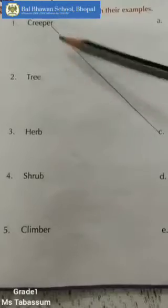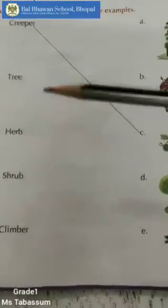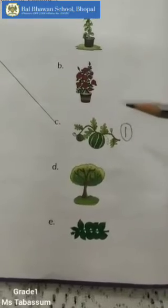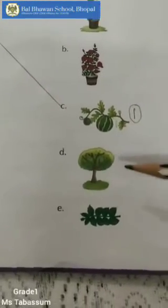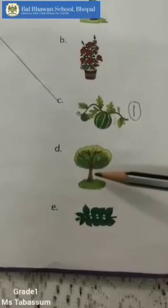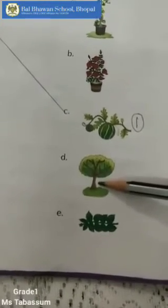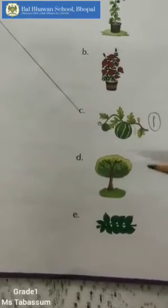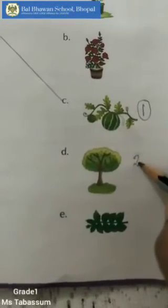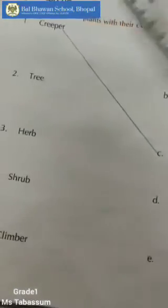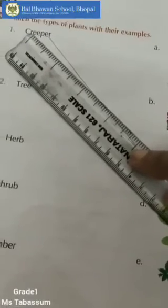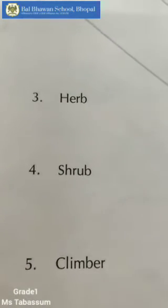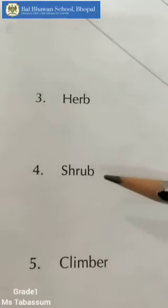Next is tree — number 2. You have to identify the tree. Plants with thick and strong stems are called trees, so this is tree. Here you can write number 2 and circle it, or you can draw a line to match tree with letter D. In the same way, you are going to identify the herb, the shrub, and the climber.